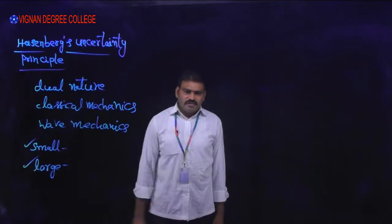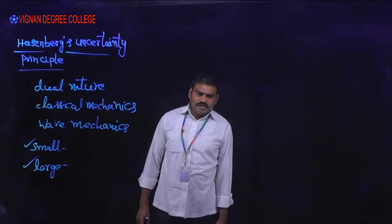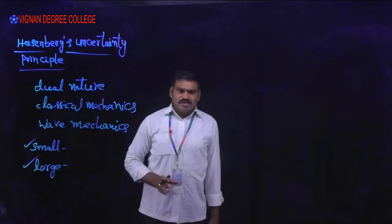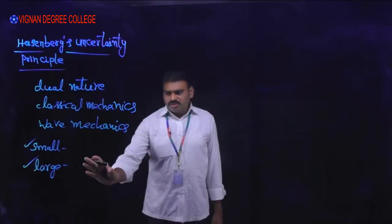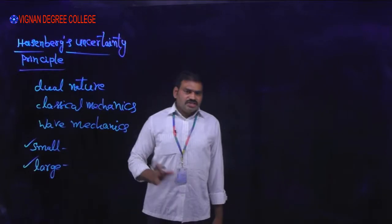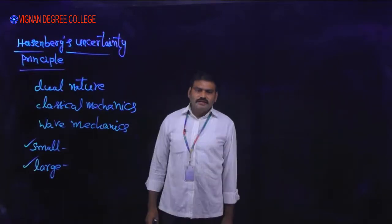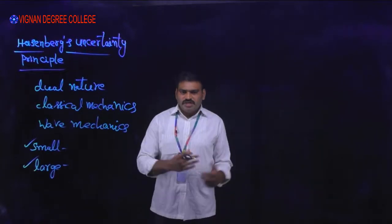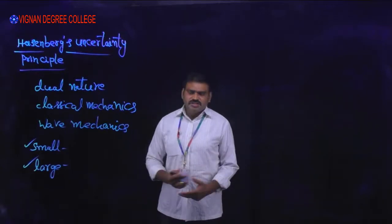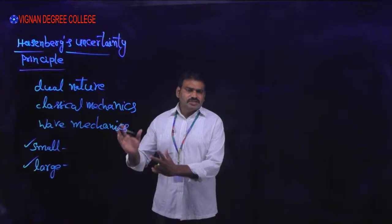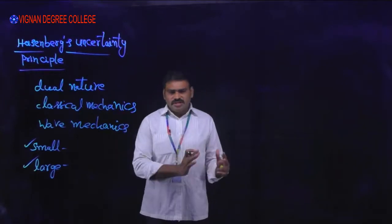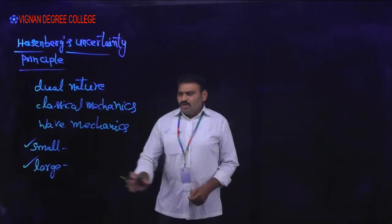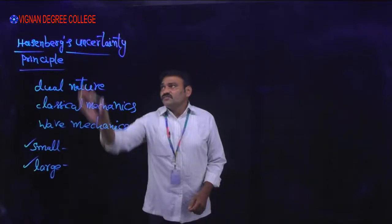According to Bohm's probability interpretation, there is a definite probability of finding the particle in space. This is the introduction to Heisenberg's Uncertainty Principle: if there is certainty in the position of the particle, there is uncertainty in its momentum; if there is certainty in its momentum, there is uncertainty in the position of the particle.